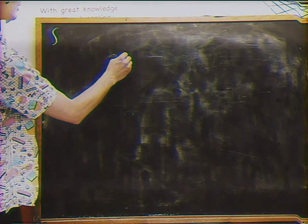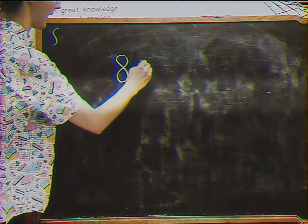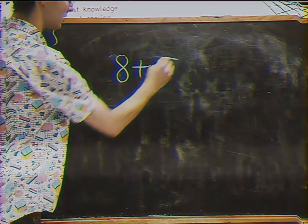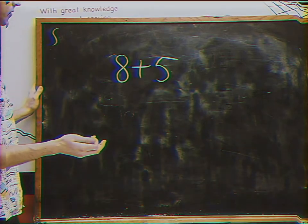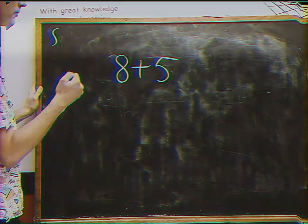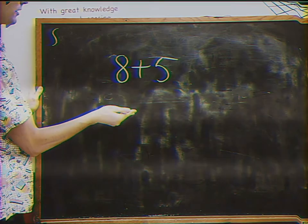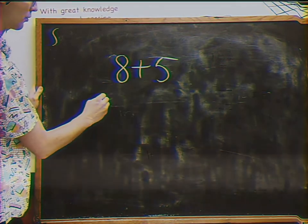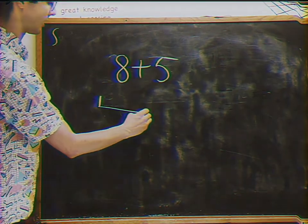So the first problem we're going to do is 8 plus 5. The first thing we're going to do, if we want to not count like 8, 9, 10, 11, 12, 13, is we're going to think up to 10 and over.